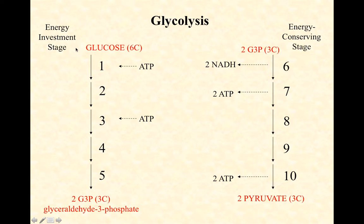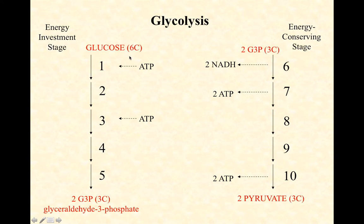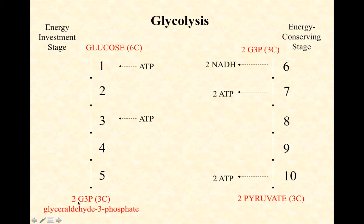The first five steps are often referred to as the energy investment stage. We're going to take glucose, destabilize it, and it's going to cost us two ATPs to do that. Glucose is in a pretty stable state — if you put it in water it's happy, even with oxygen around it won't break down on its own at room temperature. Adding two ATPs allows us to phosphorylate the glucose, and phosphorylation is a common way to destabilize a molecule.